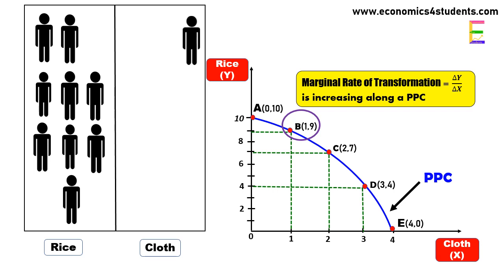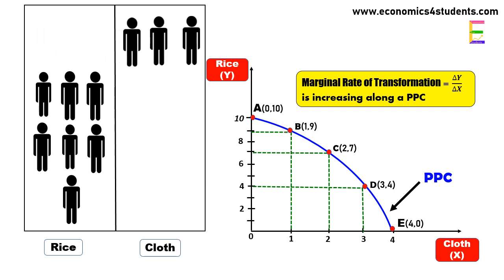If we want to again increase cloth production by one more unit, this time we have to shift two laborers from rice production to cloth production, as these laborers are specialized in rice production and their efficiency will be less when asked to produce cloth. Hence two laborers will be required to produce one more unit of cloth.